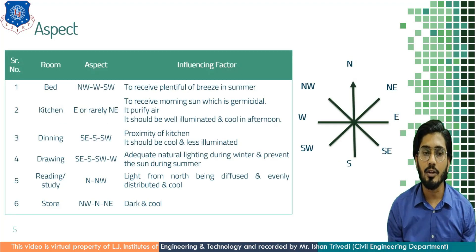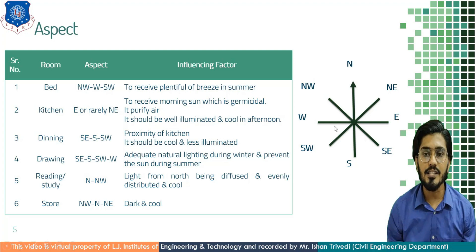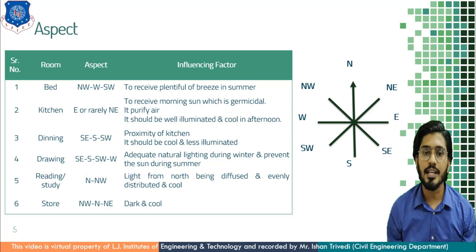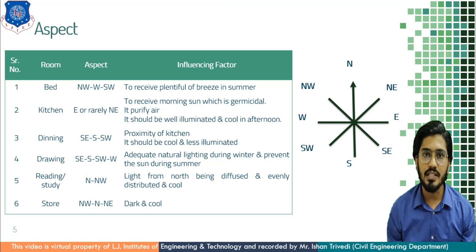Let us start with a bedroom. The suitable aspect for a bedroom is north-west to west to south-west. As shown in the map, the bedroom is provided from north-west to west and west to south-west, so that one can receive plentiful breeze in summer. In our tropical region like India, we receive cool breeze from the west direction in the evening. By placing the bedroom in the west direction, we can enjoy the cool breeze.